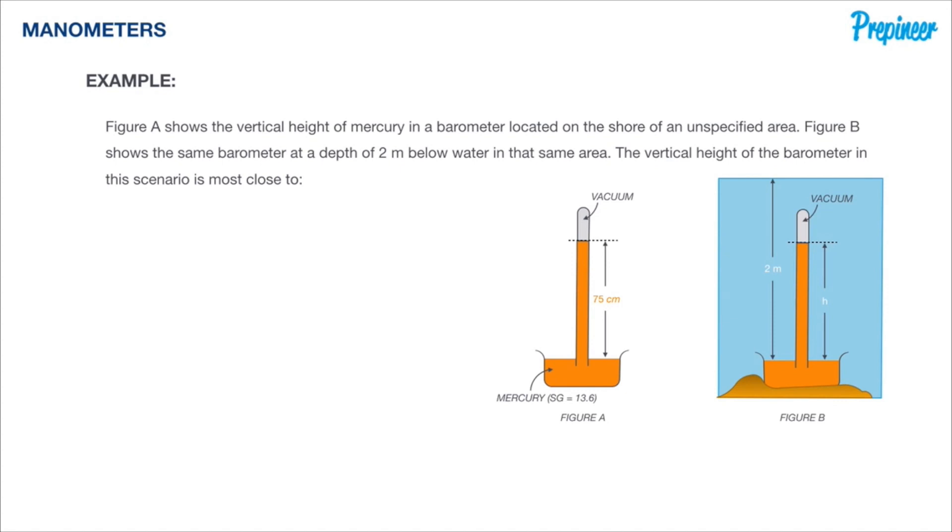This is a very interesting barometer problem. Figure A shows the vertical height of mercury in a barometer located on the shore of an unspecified area. Figure B shows the same barometer at a depth of two meters below water in that same area. The vertical height of the barometer in this scenario is most close to what?